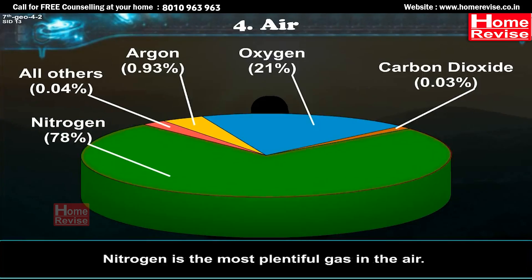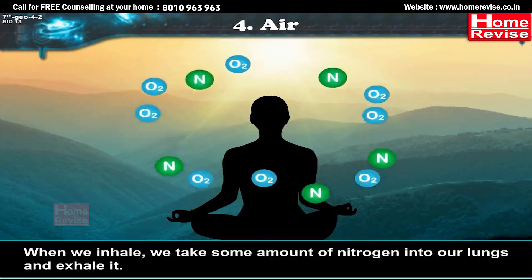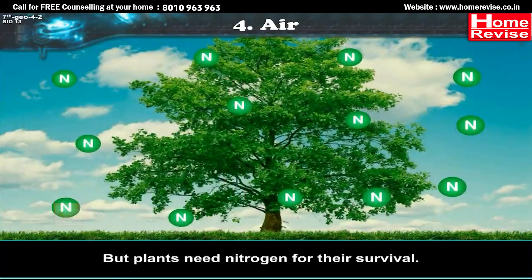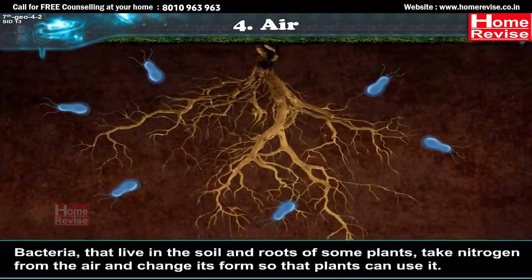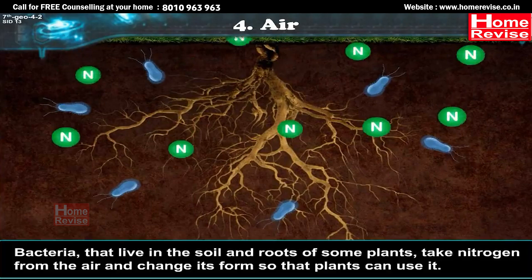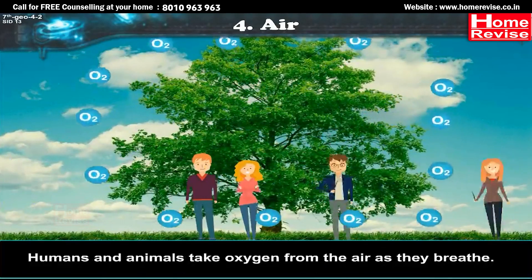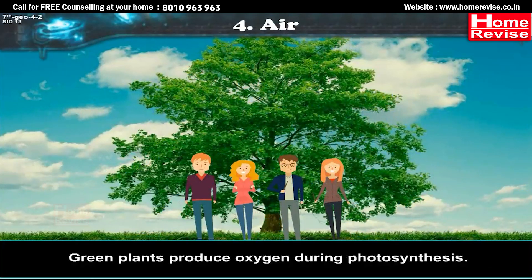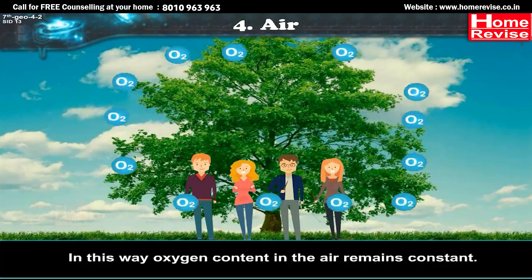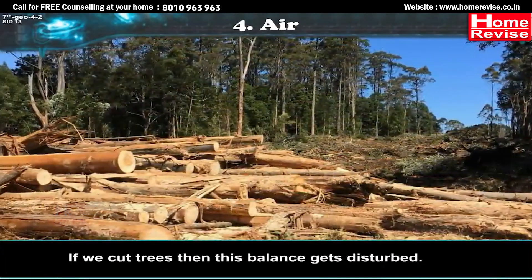Nitrogen is the most plentiful gas in the air. When we inhale, we take some nitrogen into our lungs and exhale it. But plants need nitrogen for their survival — they cannot take it directly from the air. Bacteria that live in the soil and roots of some plants take nitrogen from the air and change its form so that plants can use it. Oxygen is the second most plentiful gas. Humans and animals take oxygen as they breathe, while green plants produce oxygen during photosynthesis, keeping the oxygen content in the air constant. If we cut trees, this balance gets disturbed.